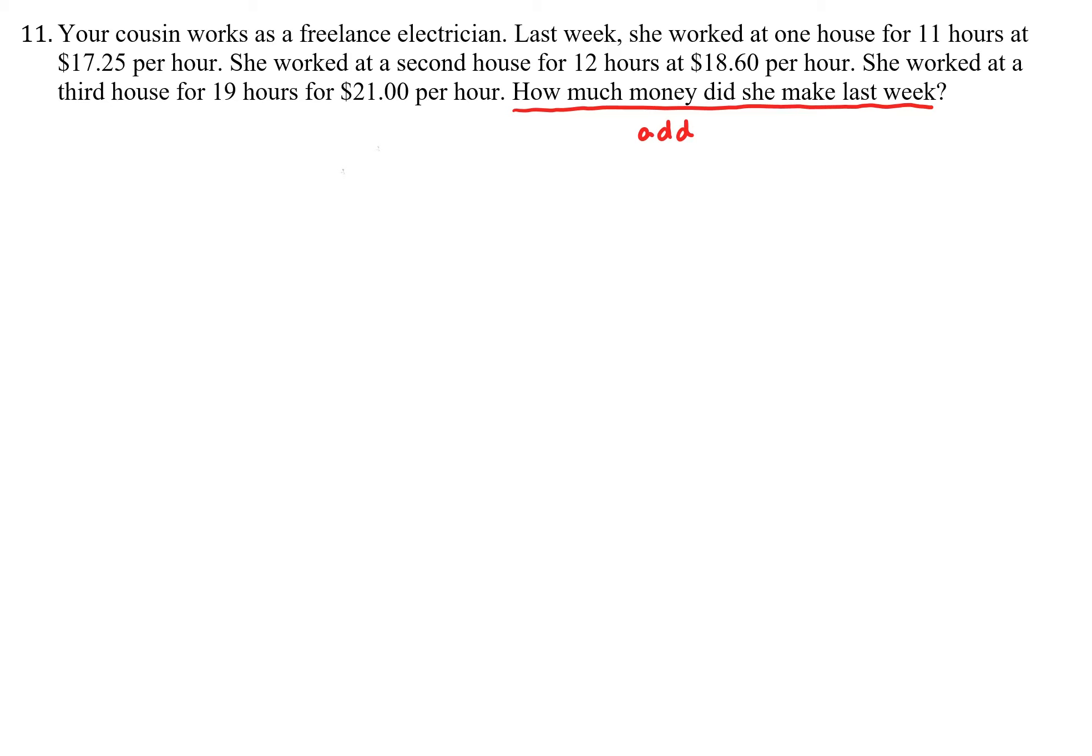Let's make sure we organize the information correctly. I'm going to use some highlighting here. The first house she worked 11 hours at $17.25 per hour. The second house, 12 hours at $18.60 per hour. And the third house, 19 hours for $21 per hour.